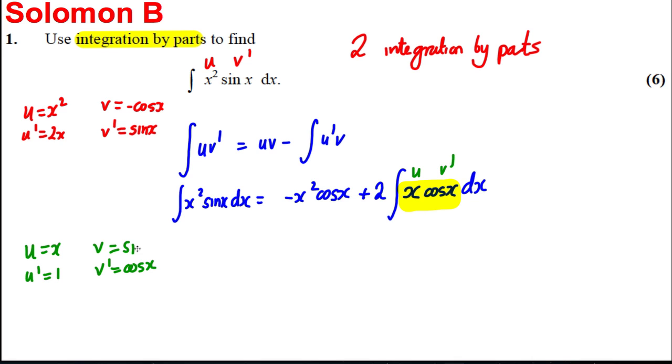u is x, so u-dashed is 1. v-dashed is cos x, and if I integrate cos x I get sine x. Okay, so the integral this time I'm working out, I'm just going to do this part, the integral of x cos x, is uv, so it's x sine x.